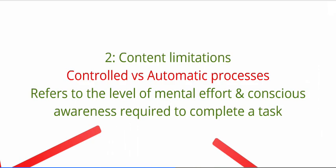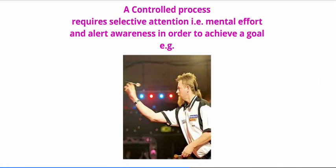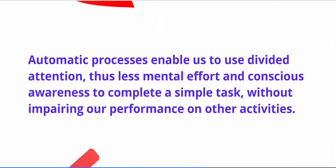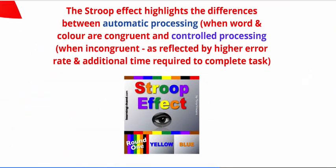There's an overlap here with selective and divided attention. If we're completing a task which requires a controlled process, we do this with selective attention — a lot of mental effort is required and we can only focus on one thing at once. For instance, when I'm trying to hit a double in darts, I need to just focus on that tiny piece of the board. Automatic processes require minimal mental effort, so we do these with divided attention and can therefore multitask. A good illustration of the difference between automatic and controlled processes is the Stroop Effect experiment.